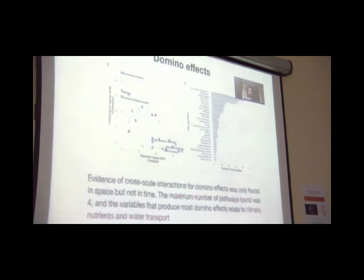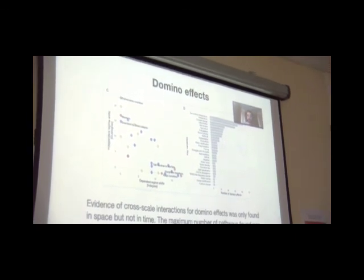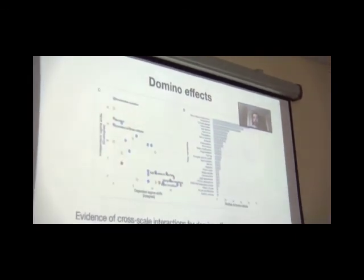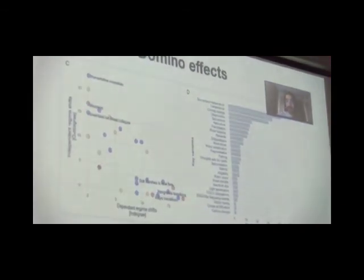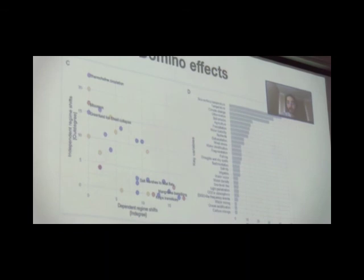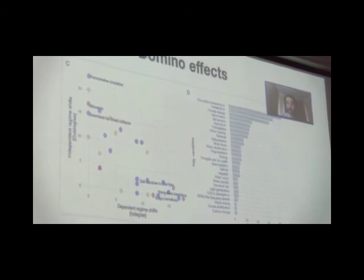For the case of domino effects, we found the pattern we were looking for. We saw that regime shifts that happen at large scales in time and space affect regime shifts that are more confined. For example, the thermohaline circulation, the Indian monsoon, the collapse of Greenland ice sheets might affect more confined regime shifts, such as mangroves collapses or kelp transitions.